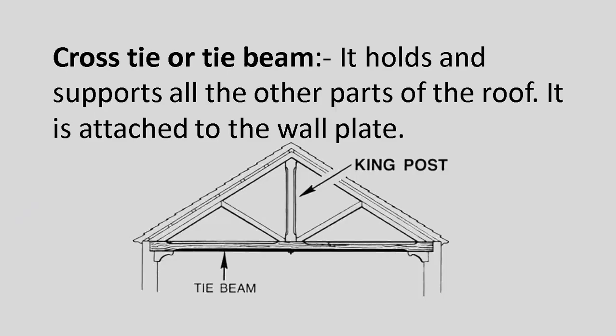Cross tie or tie beam: It holds and supports all the other parts of the roof. It is attached to the wall plate.